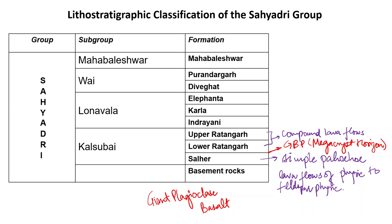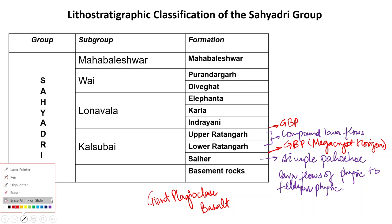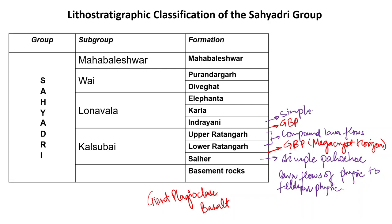The Indrayani formation of the Lunavada subgroup overlies the lower formation and is again separated by a GBP horizon. It consists of simple lava flows with columnar joints that are aphyric in nature — meaning they do not have phenocrysts. The Karla formation is essentially a compound Pahoehoe lava flow.